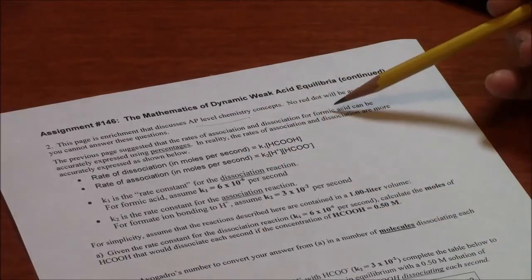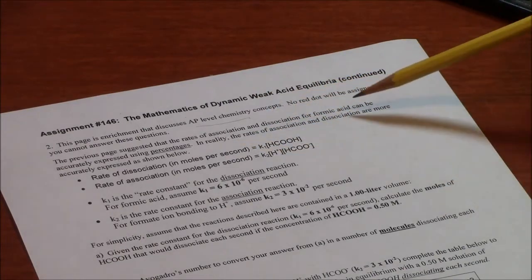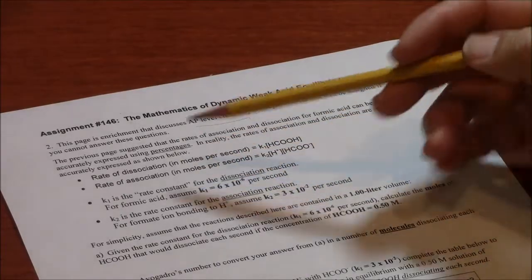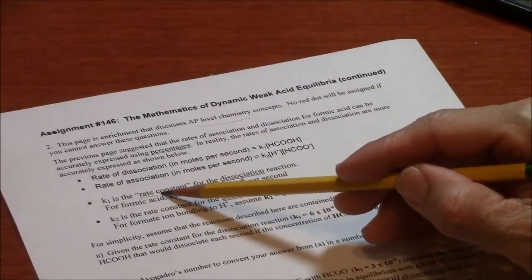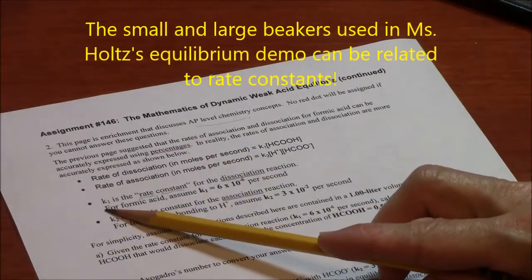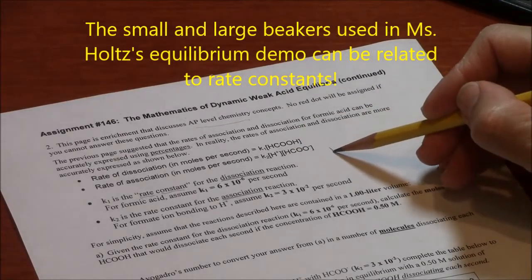What we're looking at here is the idea that instead of counting molecules or percentages, you have things called rate constants. So you've seen equilibrium constants represented by a capital K. These are rate constants represented by a lowercase K.